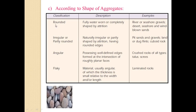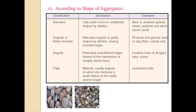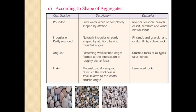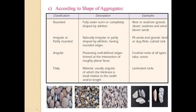Here we can see: this is the rounded shape aggregate, this is irregular or partially rounded aggregate, this is angular aggregate — we generally use angular aggregate for concrete because it gives good interlocking and rough texture, so the bond between cement paste and this aggregate is much better compared to rounded aggregate. This is the flaky aggregate, and this is the elongated aggregate.